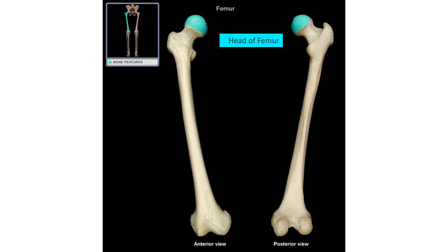The point of articulation of the femur with the pelvic girdle is a ball-shaped head. The head of the femur is more than half a sphere, whereas the head of the humerus is less than half a sphere. The head of the femur is covered by hyaline articular cartilage.